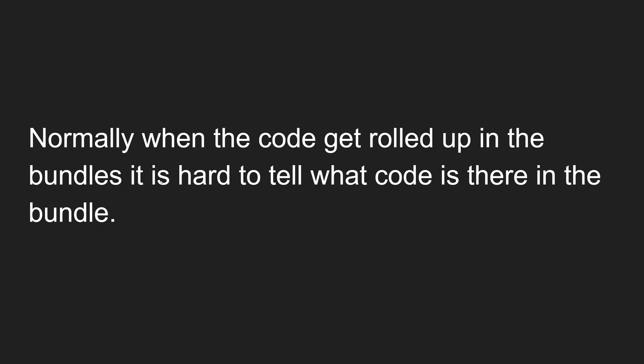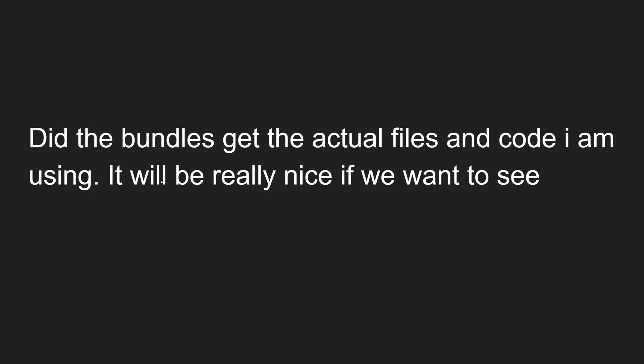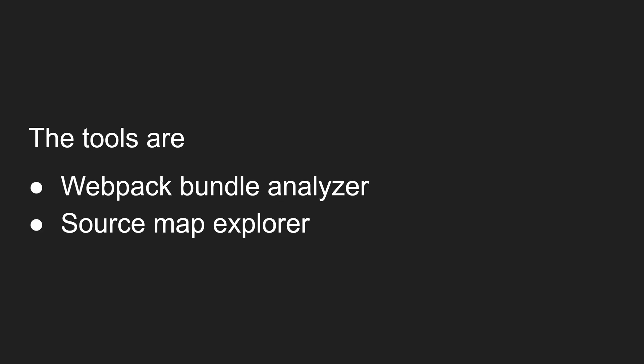Normally when the code gets rolled up into bundle files like runtime.js, it is hard to tell what code is actually existing in that bundle. We cannot know what code was actually built and where it went into the files. You may also get a doubt: did the bundled files actually include the actual files and code I wrote? Did it get bundled or not? It would be really nice to be able to see those things.